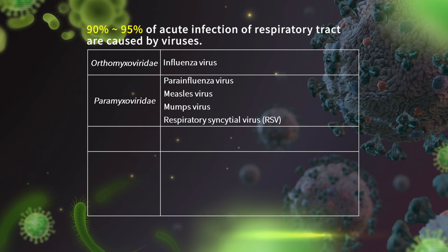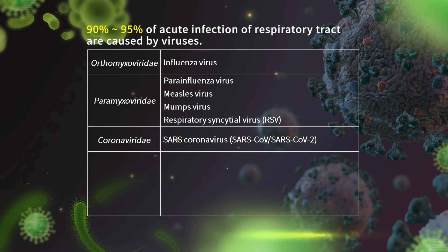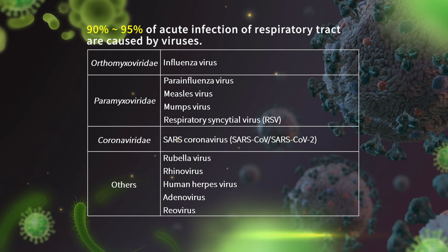Another group is Paramyxoviridae. Compared with Orthomyxoviridae, Paramyxoviridae have many different characteristics, but both can infect humans via the mucus membrane. Parainfluenza, measles, mumps, and respiratory syncytial virus belong to Paramyxoviridae. The third family is Coronaviridae — SARS-CoV and SARS-CoV-2 are in this family. Other viruses causing respiratory infections include rubella virus (sometimes called German measles), rhinovirus ('rhino' means nose), human herpesvirus, and adenovirus.